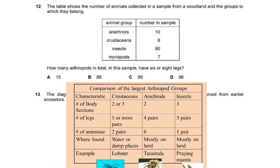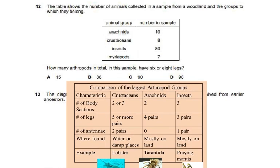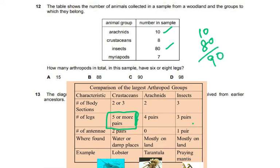Question twelve: the table shows animals collected in a woodland sample — arachnids 10, crustaceans 8, insects 80, myriapods 7. How many arthropods have six or eight legs? Crustaceans have five or more pairs (ten or more legs), arachnids have four pairs (eight legs), and insects have three pairs (six legs). Adding arachnids and insects: 10 plus 80 equals 90. The answer is C.